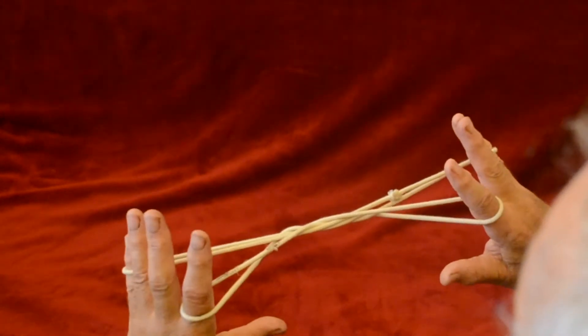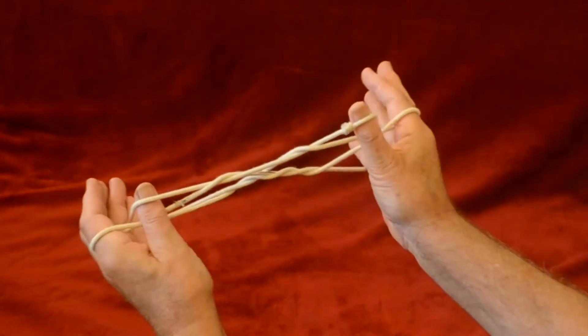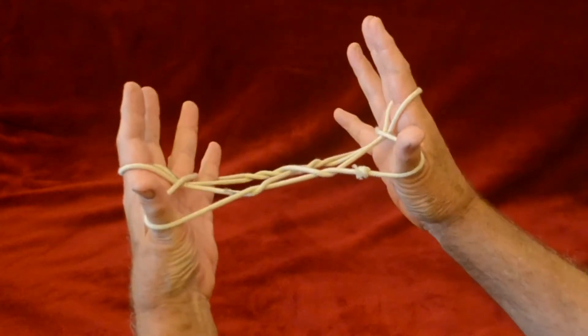Same time you release the thumbs, and now the thumbs come over the index loops into the little finger loops and draw back the near little finger string.